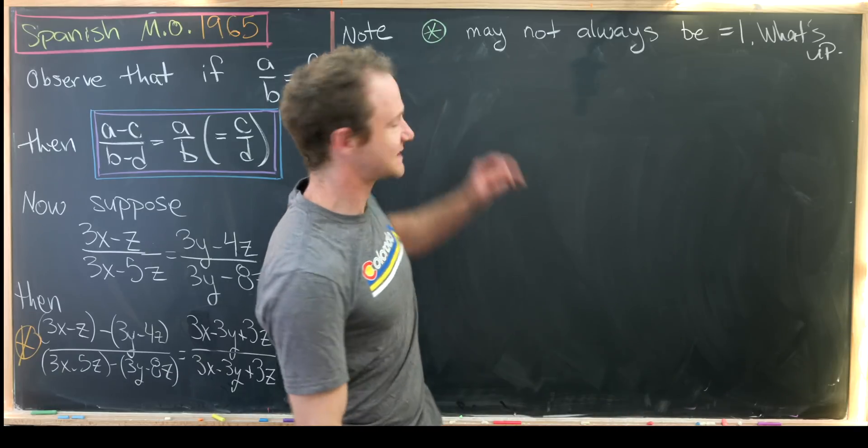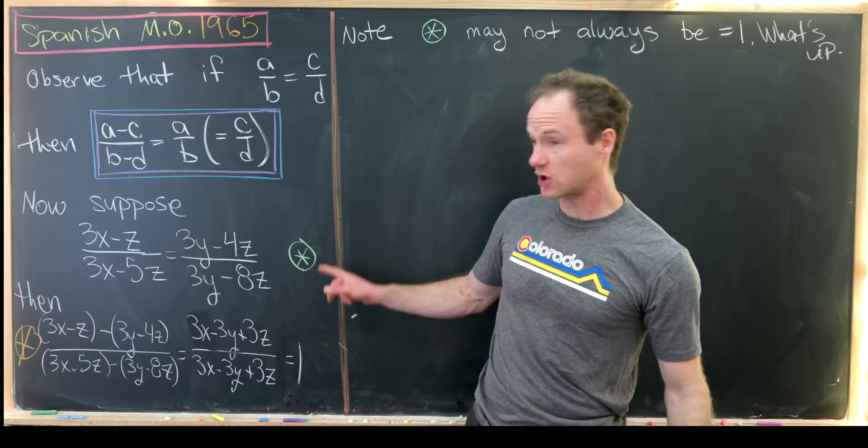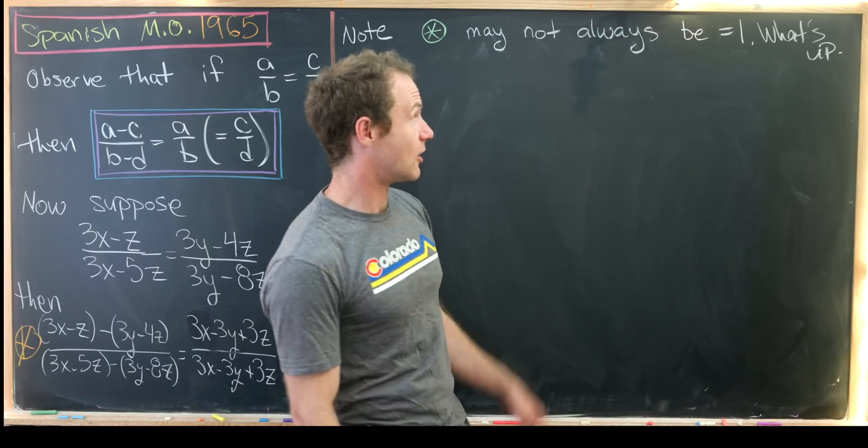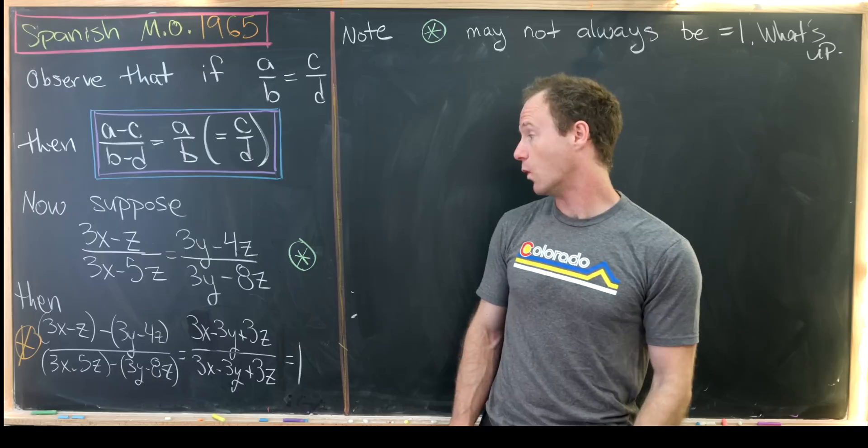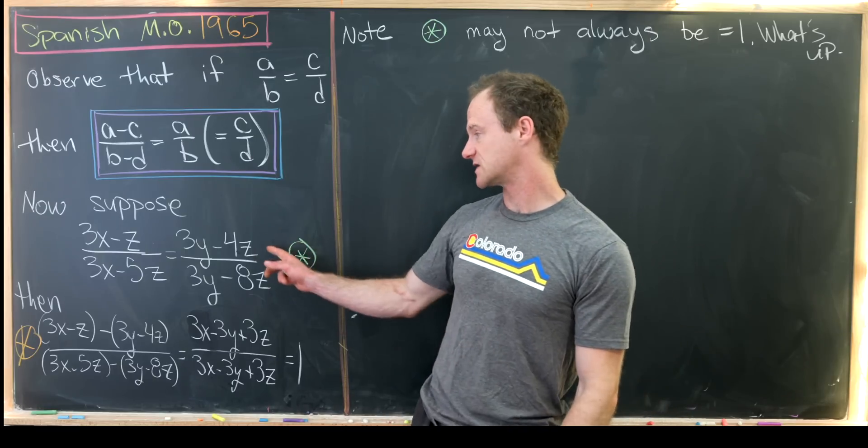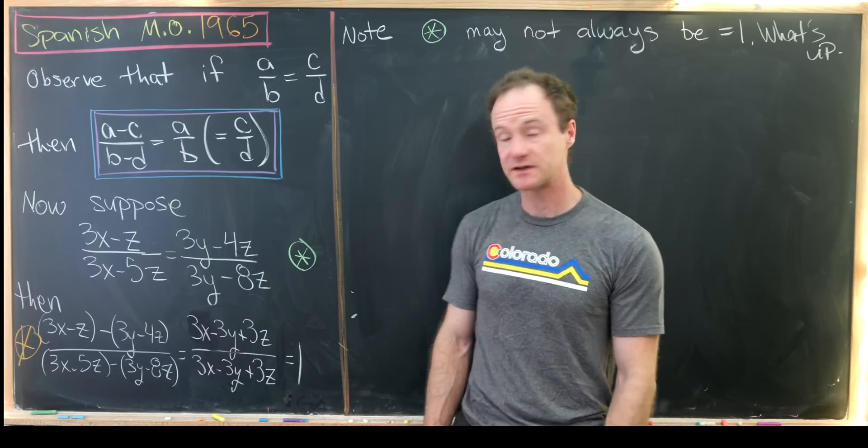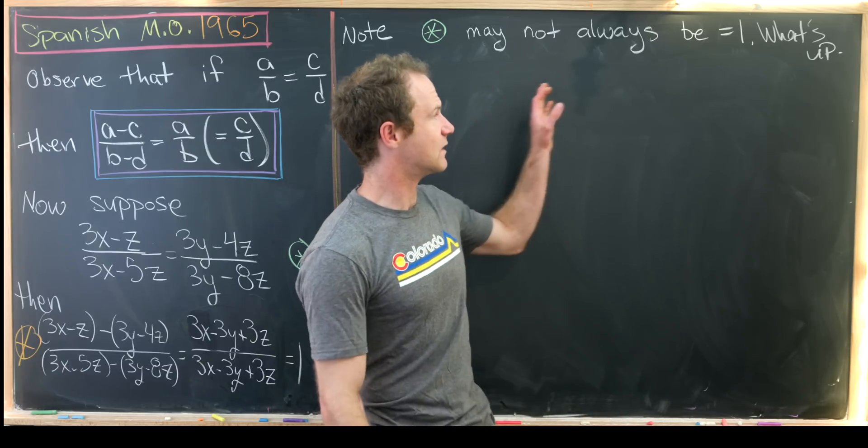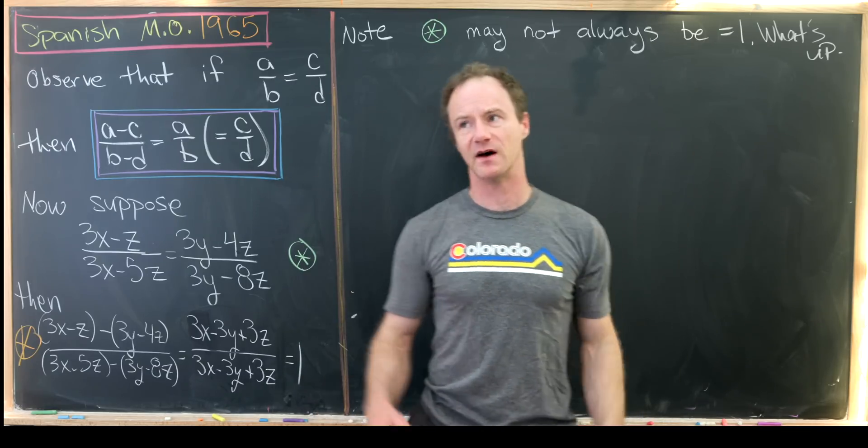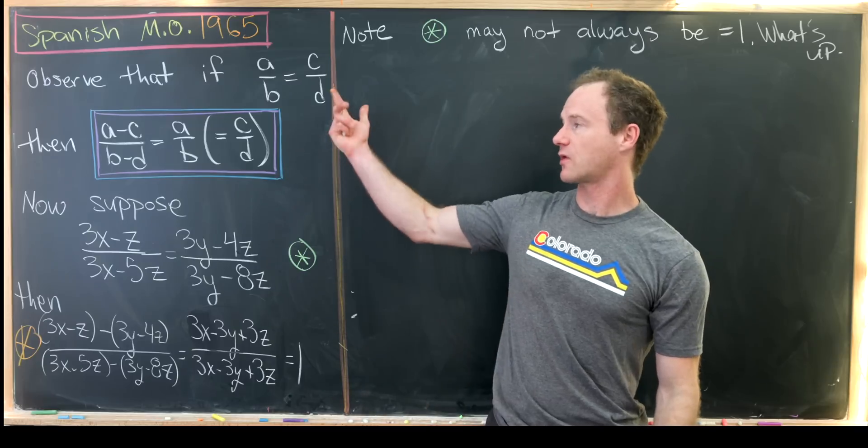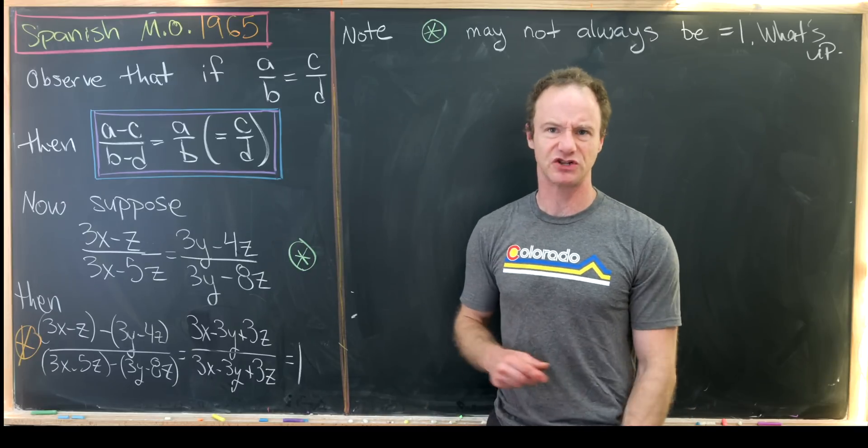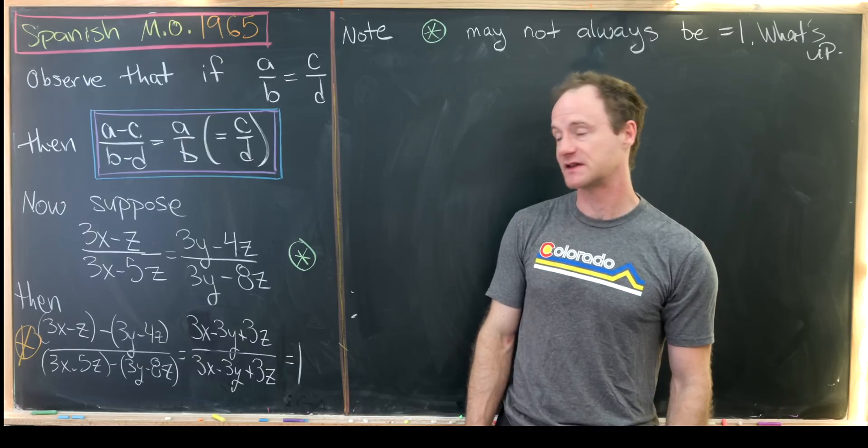But then we can notice that this original starred fraction may not always be equal to 1. So I'll let you guys work out some examples where this is most definitely not equal to 1, but those aren't too hard to find. Then the question here is kind of what's up, or really what the problem as stated is what's the logical inconsistency behind this?